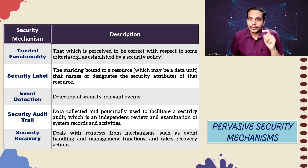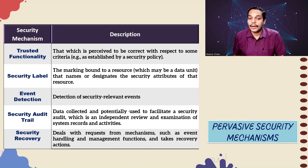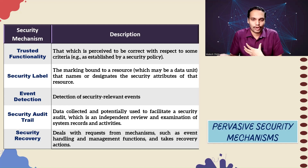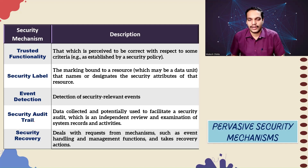The fourth pervasive mechanism is security audit trail. Accountability is important in security — any action must be linked to a specific individual, system, or process. This involves data collected and potentially used to facilitate a security audit, which is an independent review and examination of system records and activities. It includes collection of logs: who does what, which system accesses what resource, how long, password logins, and so on.